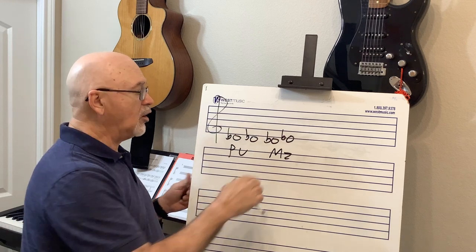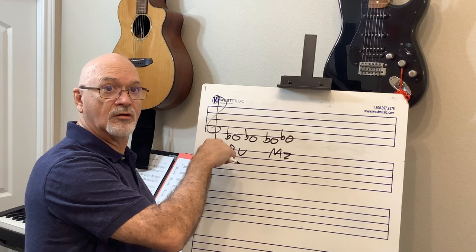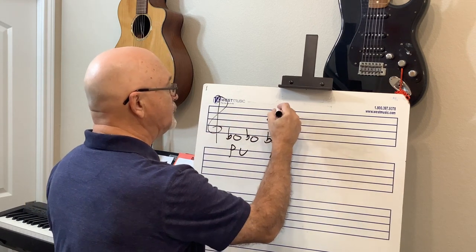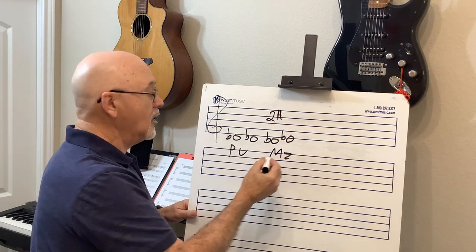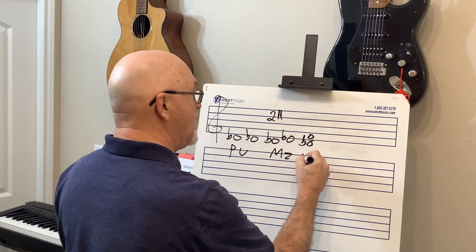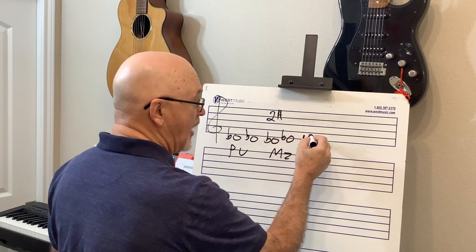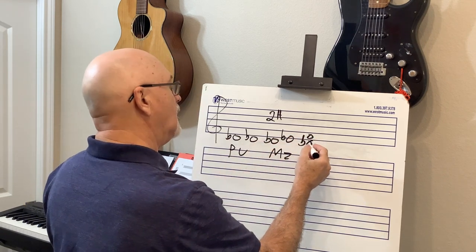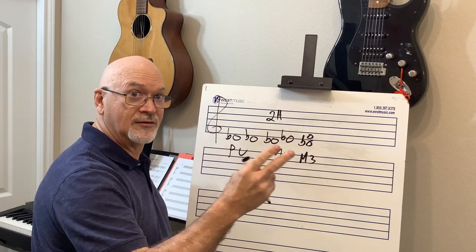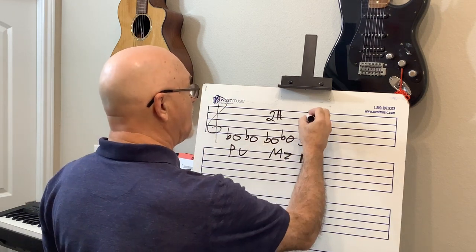D-flat to F is a major third — E-flat is the second note, and F is the third note in the D-flat major scale. It's also D-flat to D, to E-flat, to E, to F — that's four half steps. So a major third is four half steps.